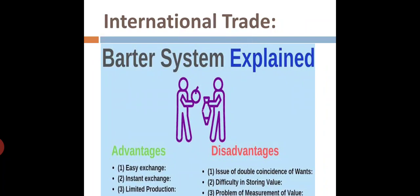Then there comes international trade. In the very beginning, I showed the picture of barter system. I told you that it was the system of exchanging goods, but there were some advantages and disadvantages. Have a look at this picture. The advantages for barter system were easy exchange, instant exchange, and limited production. What were its disadvantages? Issues of double coincidence of wants, difficulty in storing value, and problem of measurement of value.